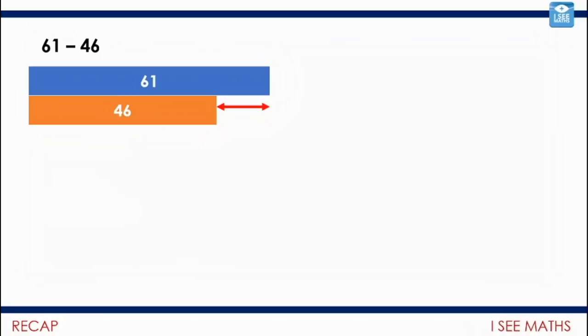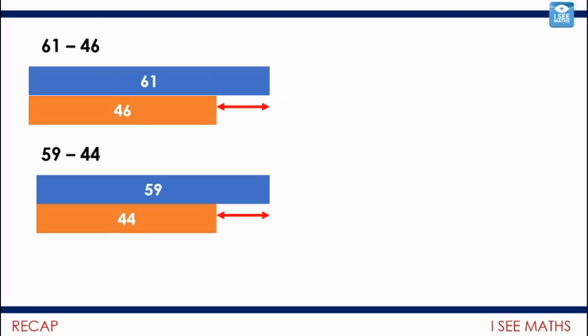We're going to start by recapping on this wonderful technique for adjusting subtraction calculations. 61 subtract 46. Well, actually, I know a way I can make this calculation easier because if I subtract 2 from both numbers, that difference will be the same because both numbers have got smaller by the same amount. The difference will stay the same.